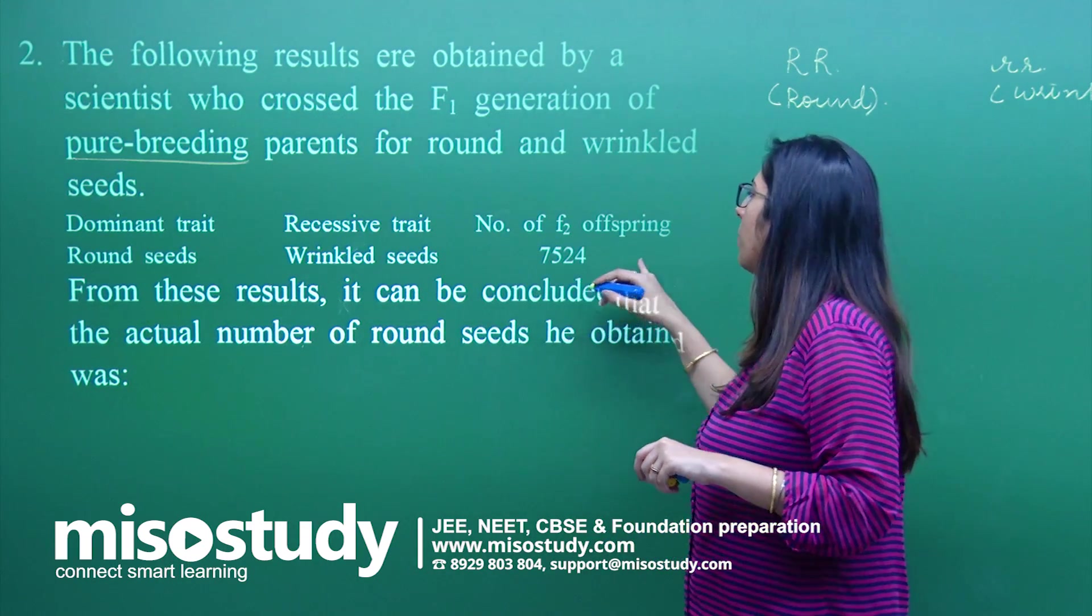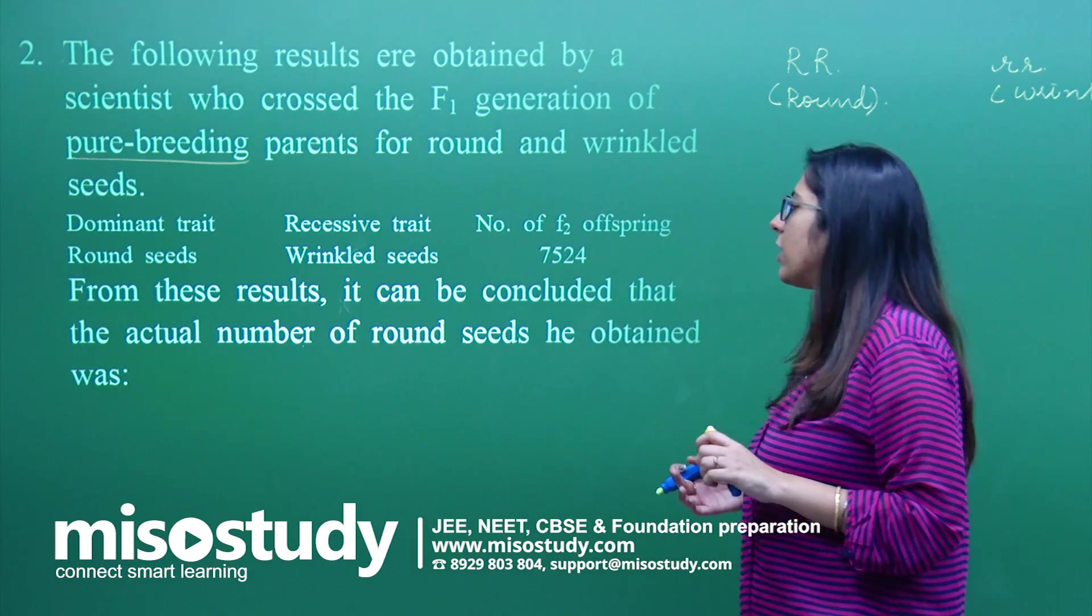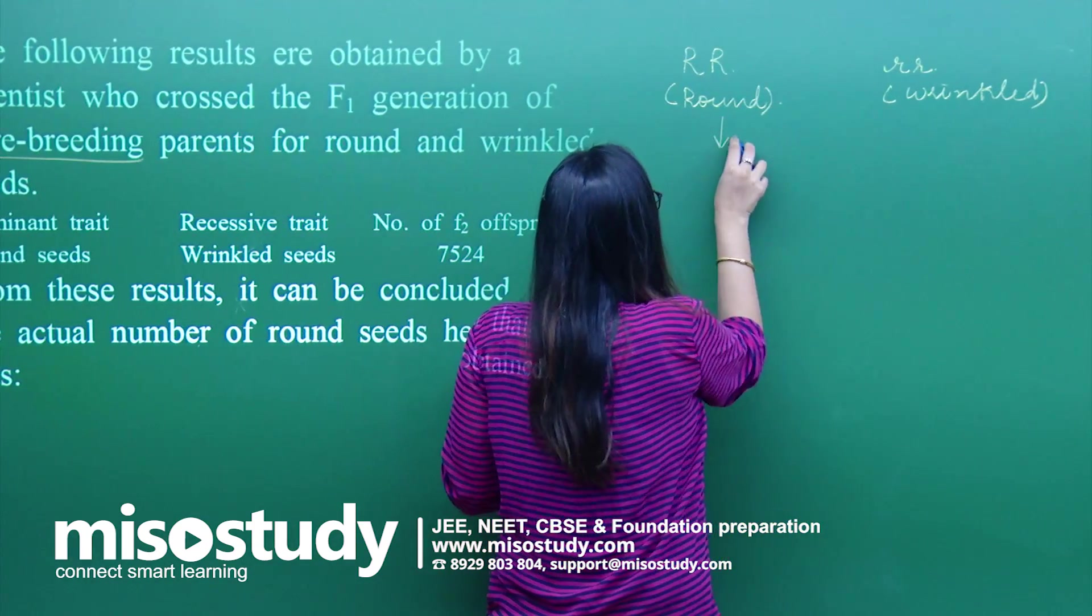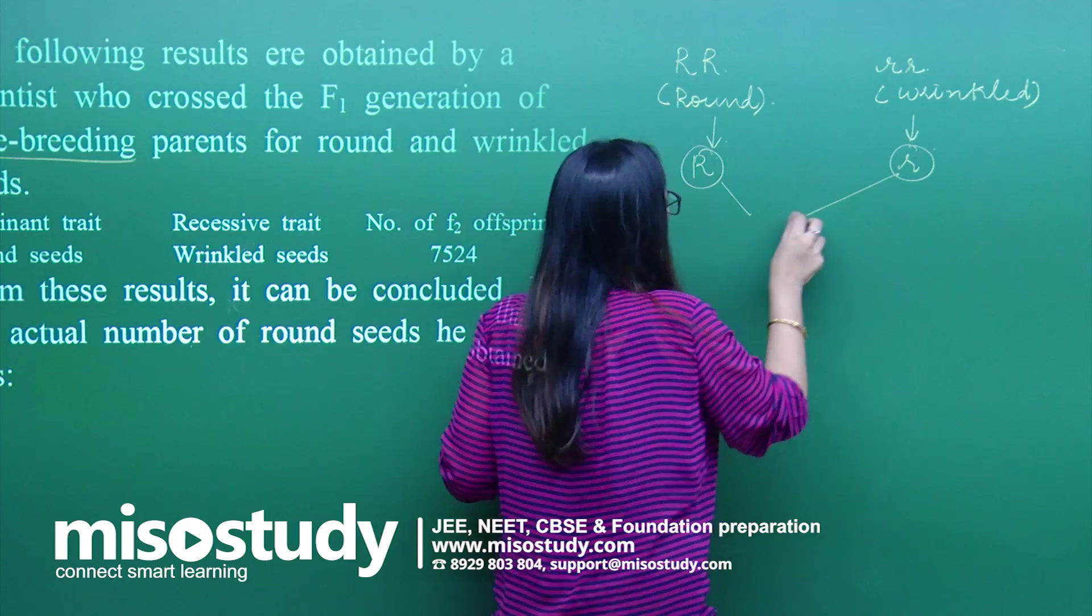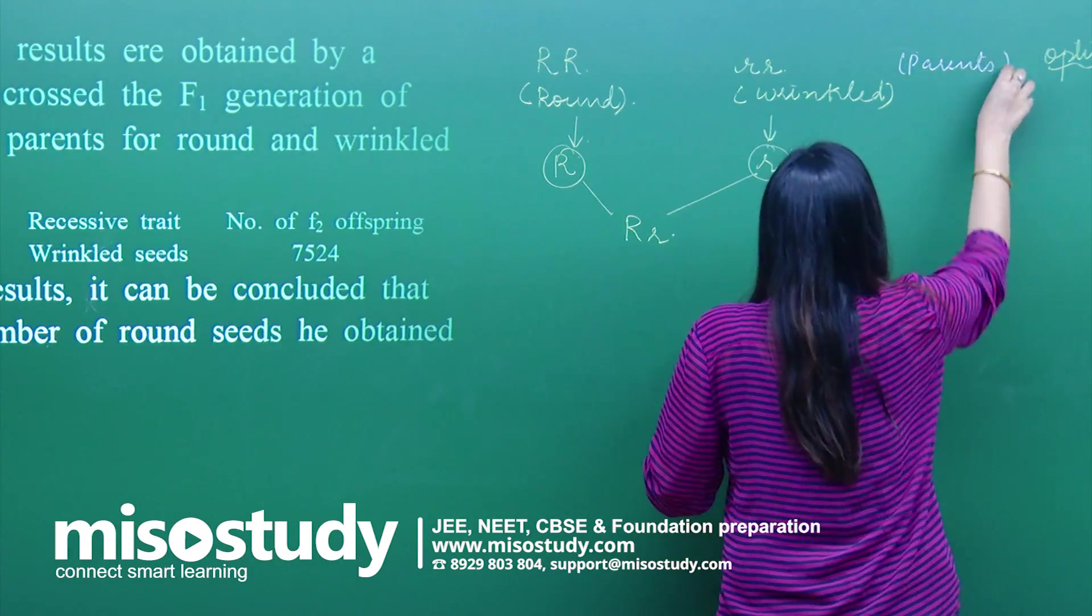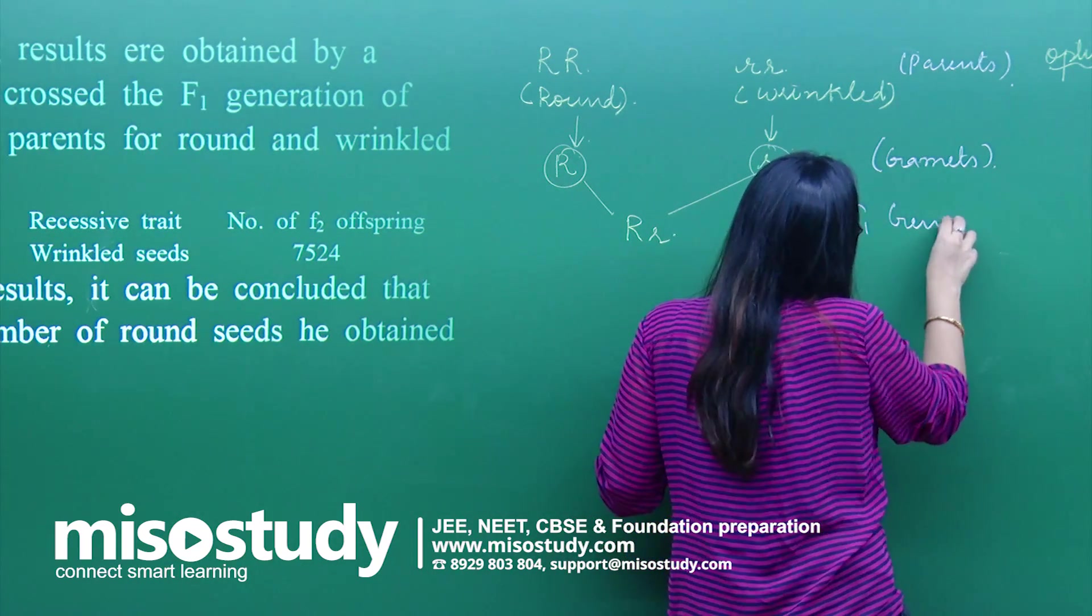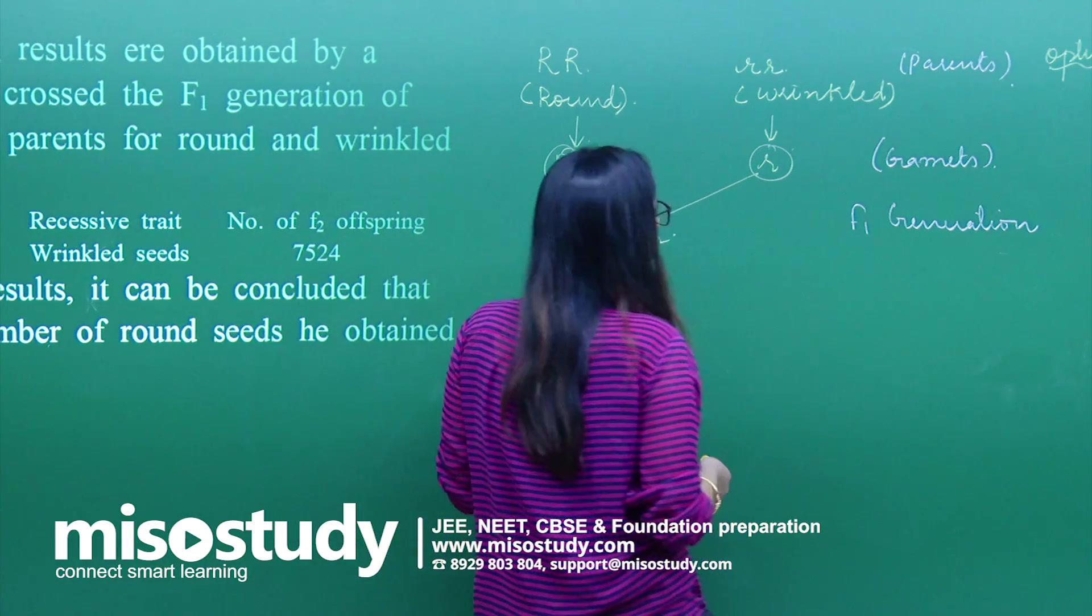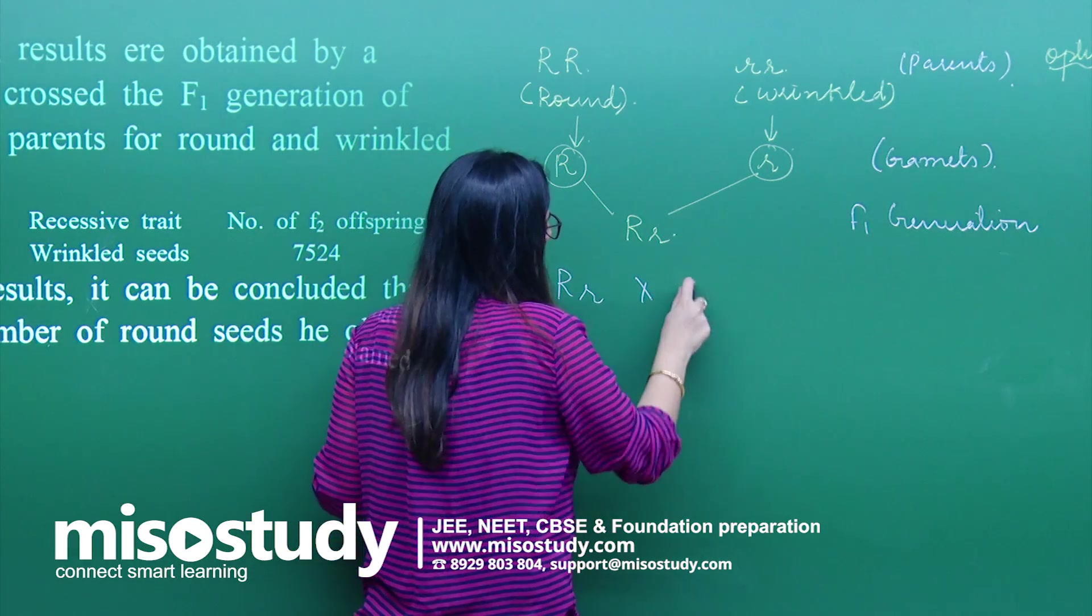The total number of F2 offspring are 7524. From these results, it can be concluded that the actual number of round seeds he obtained was... Let us go for the cross first. The gametes will be formed of single type. These are parents, these are the gametes. This is the F1 generation. They have reached up to the F2 generation, so we will also go for the F2 generation.